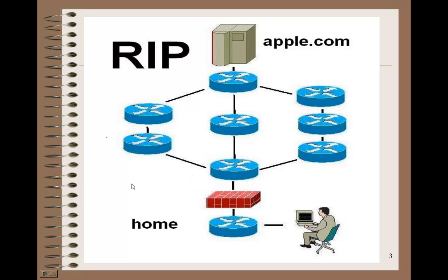Here's a diagram of a home user having their home router trying to reach apple.com. This router — the kind you might find at an ISP — will have more than one path in order to reach Apple. It could have maybe three paths. Using RIP, it would count the number of devices it needs to go through in order to reach Apple.